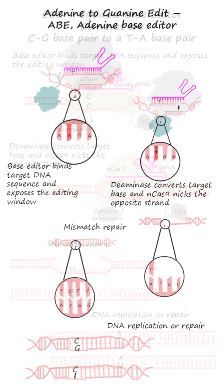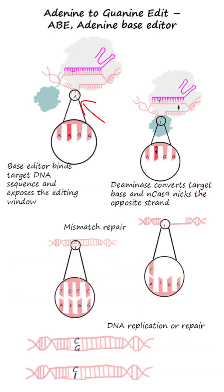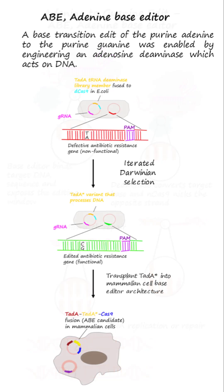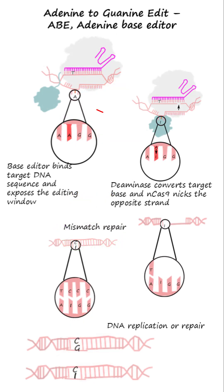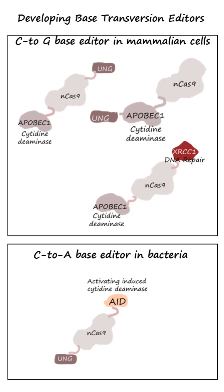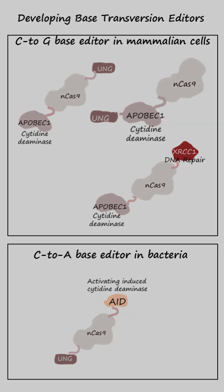Another base transition — that of the purine adenine to the purine guanine — was enabled by engineering a transfer RNA adenosine deaminase to act on DNA. The engineered adenosine deaminase converts adenine to inosine. This inosine is subsequently read or replicated as guanine by a polymerase, culminating in the direct transformation of AT base pairs into GC base pairs.